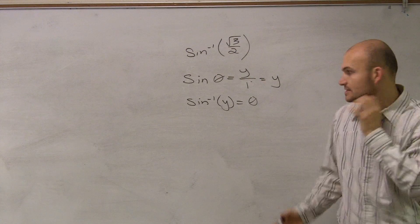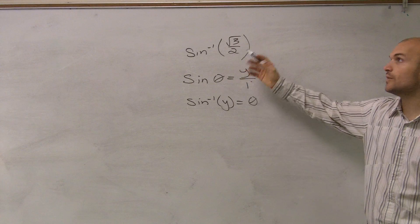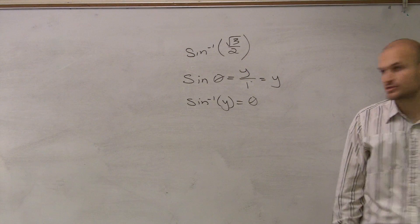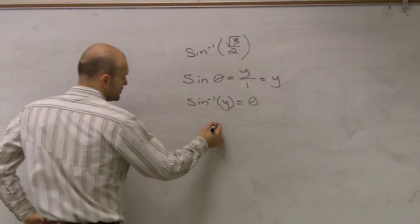So to do this, what I'm going to have to do is figure out what angle has a coordinate point of radical 3 over 2. So I'll take a look at my unit circle.